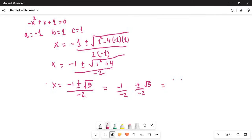Minus 1 divided by minus 2 is one half, and plus or minus divided by minus becomes plus or minus, giving one half plus or minus square root of 5 divided by 2.